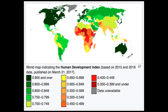The HDI data is regularly published by the United Nations Development Programme. The differences across the world are very large, ranging from the highest values in North America, Europe, Japan and Oceania, to the lowest in Central Africa.